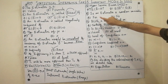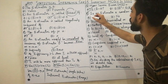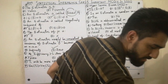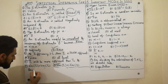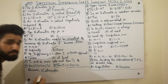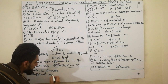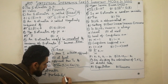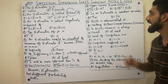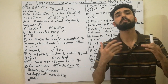MCQ 9: Is an estimator a random variable? Yes, because an estimator has different probability distributions. So an estimator is a random variable because it has different probability distributions, or different probability functions.